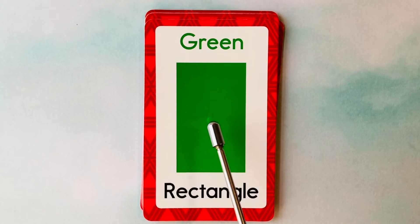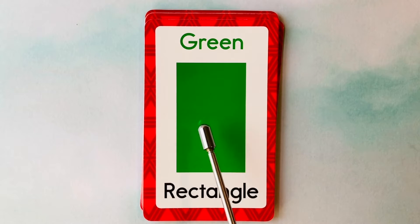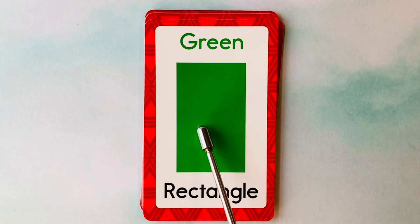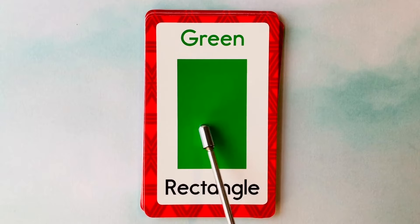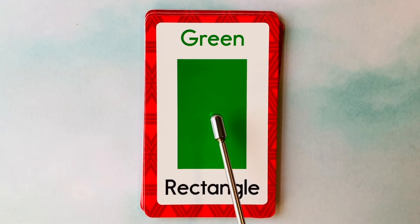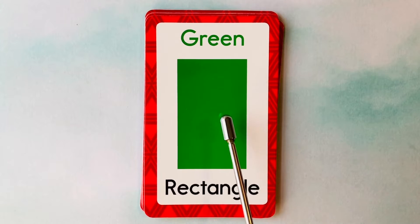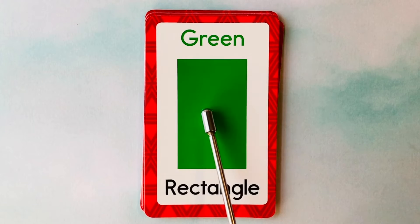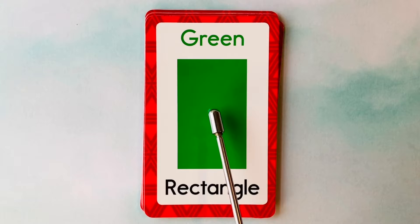This is a rectangle. What color is this rectangle? It's a green rectangle. This is a green rectangle.